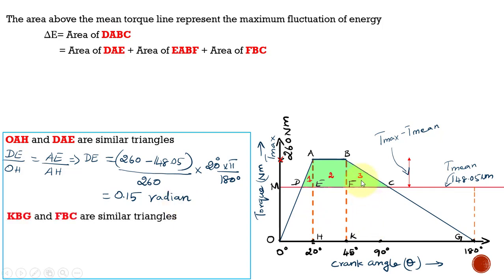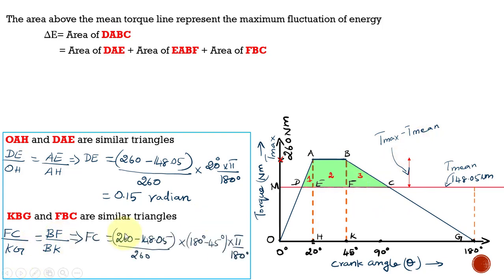Applying the same concept to triangles KPG (larger) and FPC (smaller): FC / KG = PF / PK. Substituting: PF = T_max − T_mean = 260 − 148.05 = 111.95 Newton meters; PK = 260 Newton meters; KG = (180° − 45°) × π/180 radians. This gives FC = 1.014 radians.